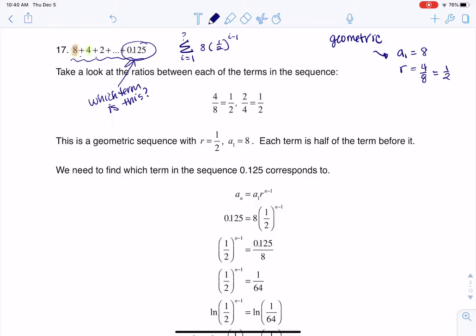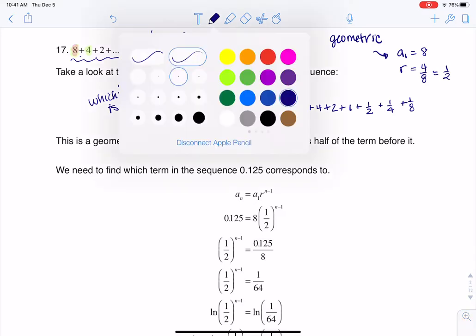Since my ratio isn't too bad, I could actually make the series, or I could play the series out. So we have 8 plus 4 plus 2. I know that the next term would be half of that, so that would be 1, and then it would be 1 half, and then it would be 1 fourth, and then it would be 1 eighth. And if you know 0.125 as a fraction, this is 1 eighth.